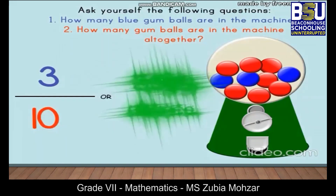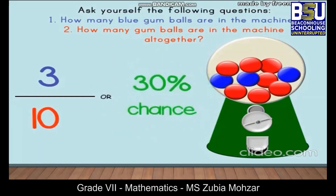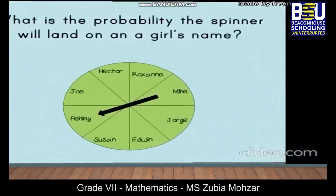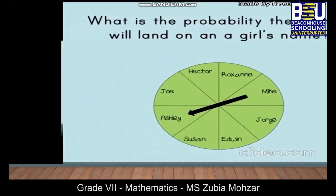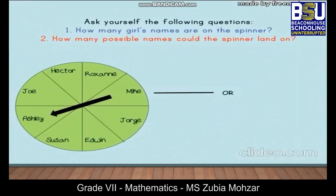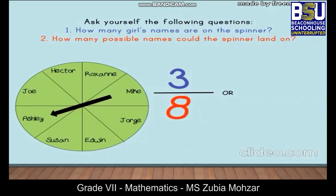Now take an example of a spinner. What is the probability the spinner will land on a girl's name? How many girls' names are on the spinner? Three. Now how many possible names could the spinner land on? Count the total number — eight.